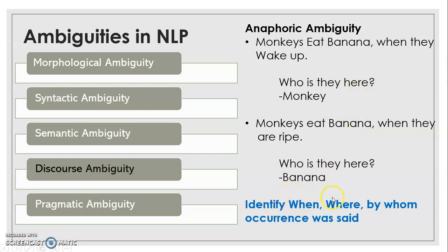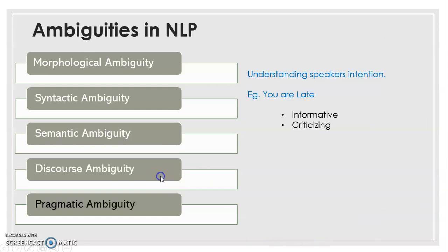In discourse ambiguity we try to identify when an event happened, where, or by whom the occurrence was said. Pragmatic ambiguity deals with understanding the speaker's intention. For example, the sentence 'You are late' — is it an informative sentence or a criticizing one? In pragmatic ambiguity we try to find out the hidden intention of the speaker: is it a promise, a criticism, an order, a request, or appreciation? Understanding that is the pragmatic ambiguity.